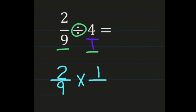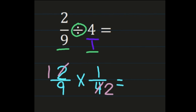Now we're ready to take our multiplication steps: numerator times numerator and denominator times denominator. However, if you look closely, we have two and four — they share a common factor of two, so we can simplify before moving on. Two divided by two is one and four divided by two is two. Now numerator times numerator: one times one is one. And denominator times denominator: nine times two is eighteen. So our final answer is one-eighteenth.